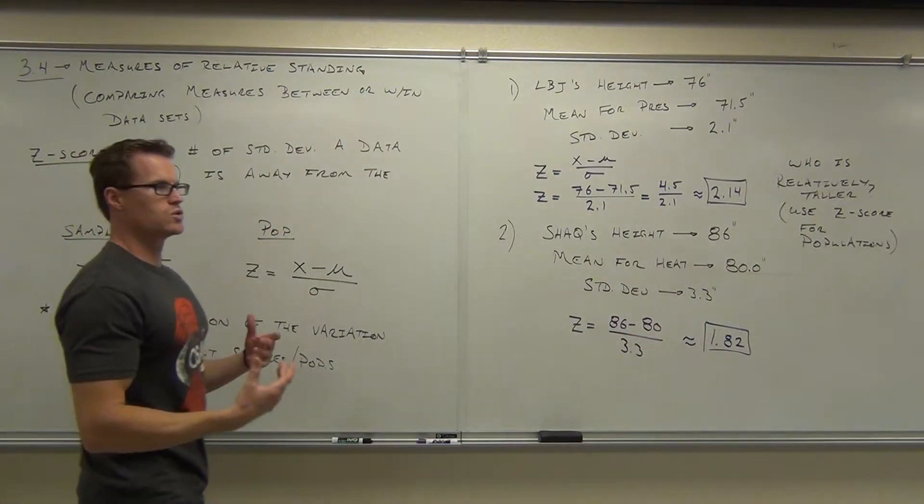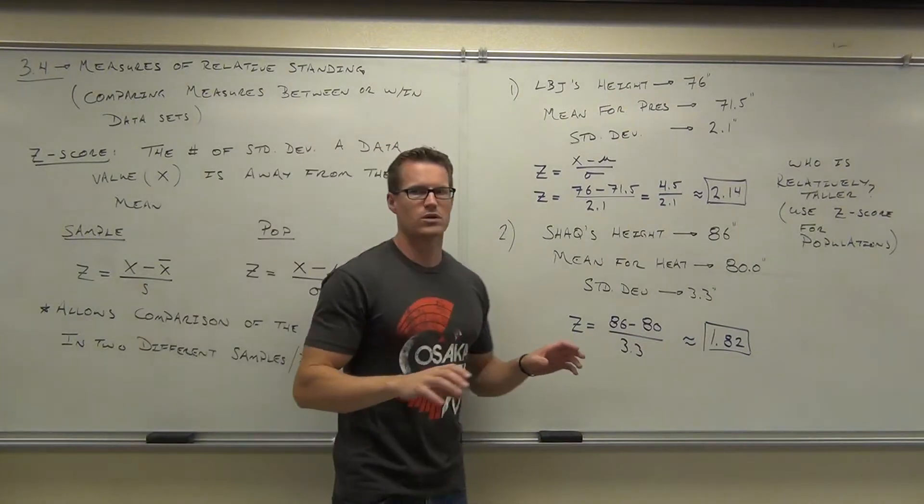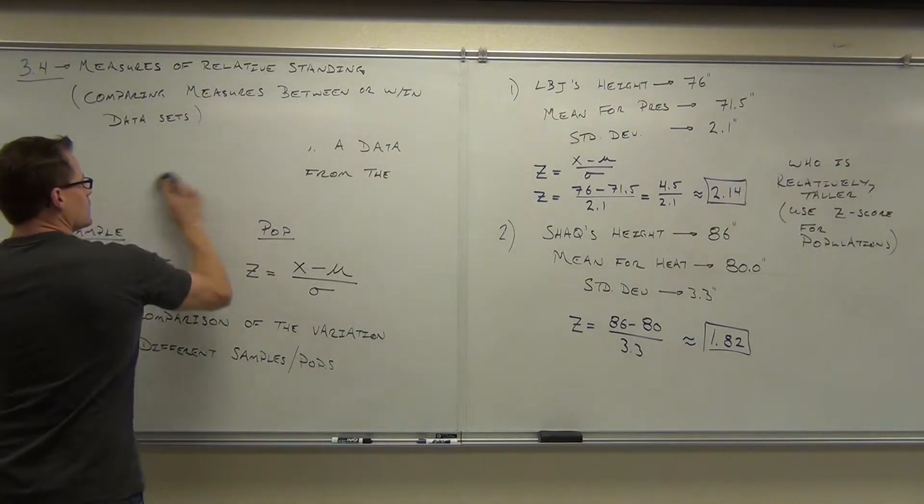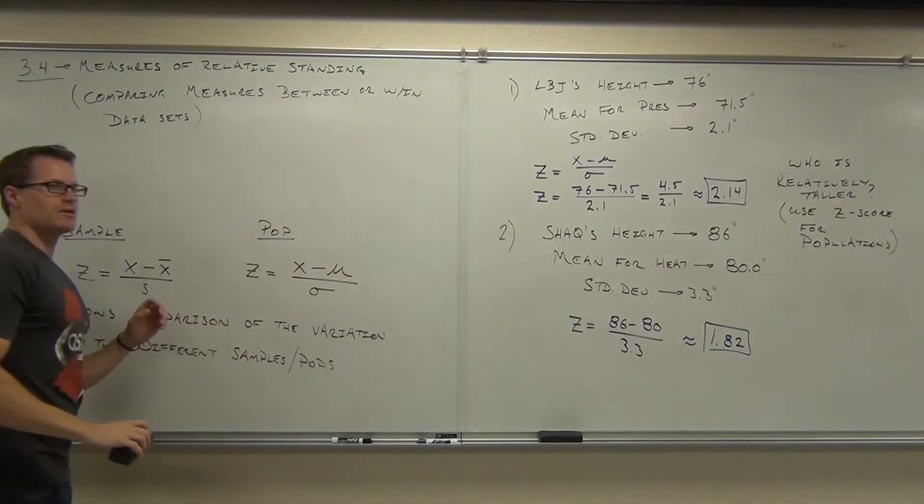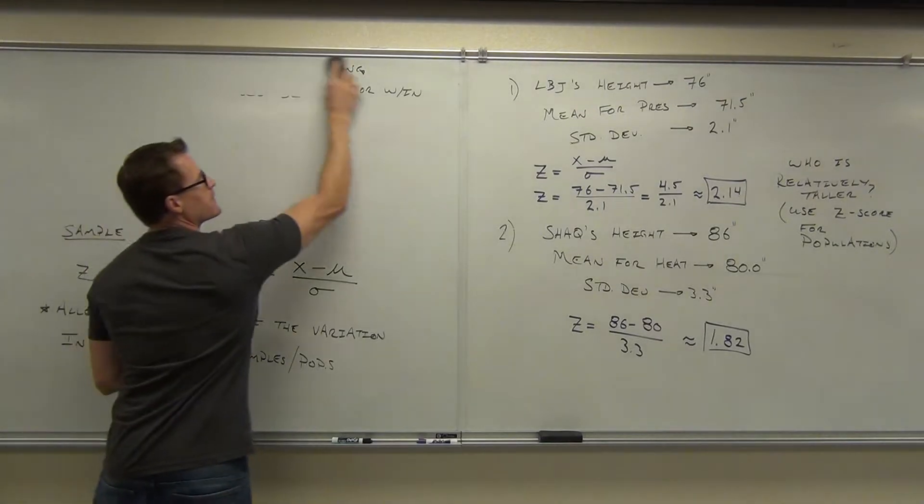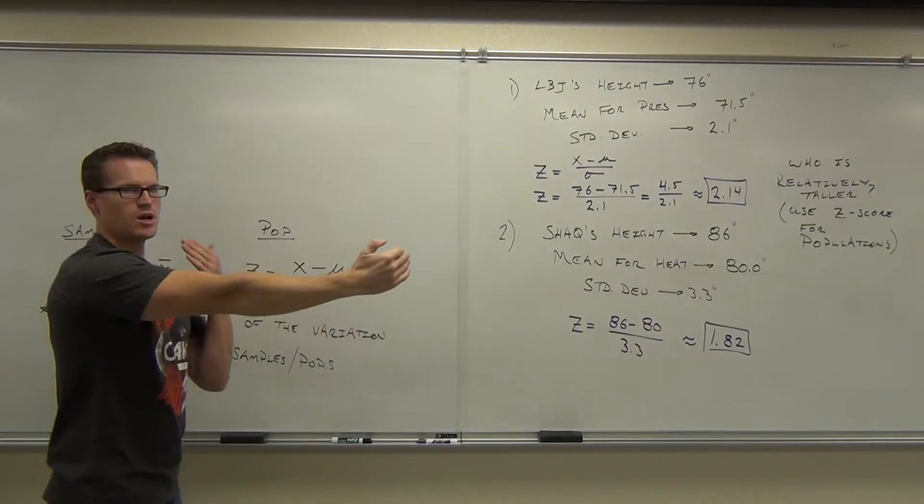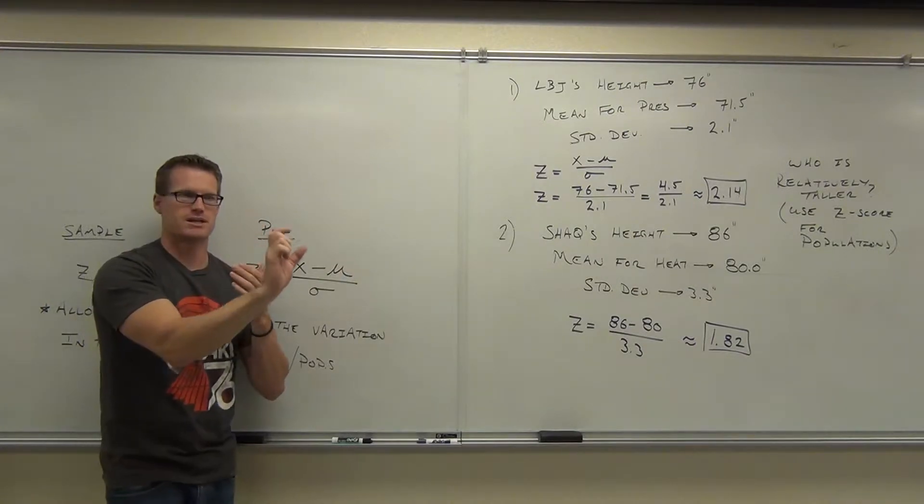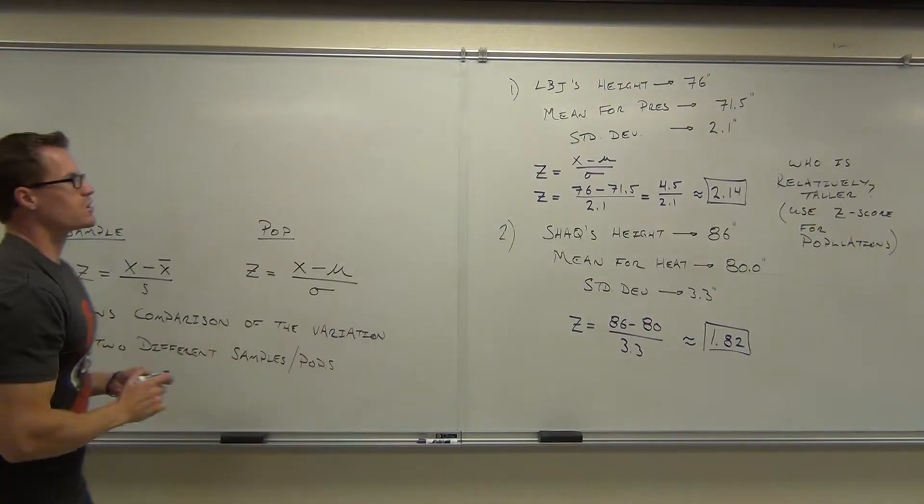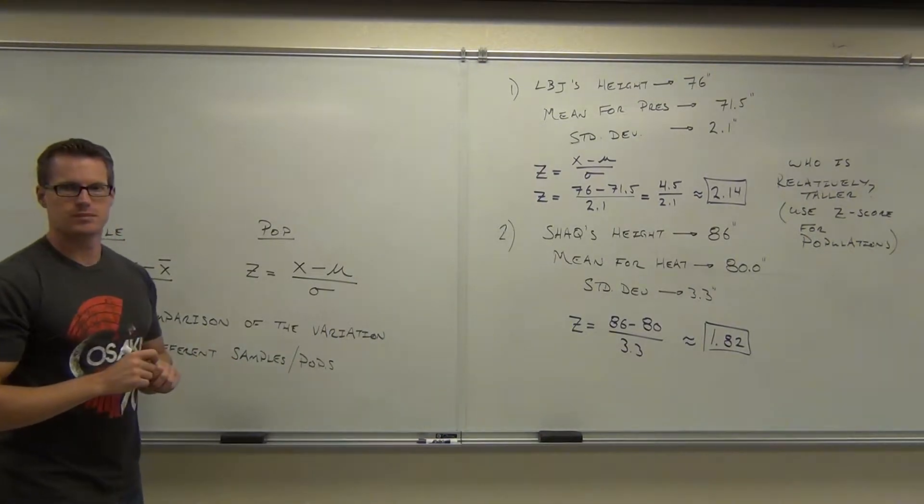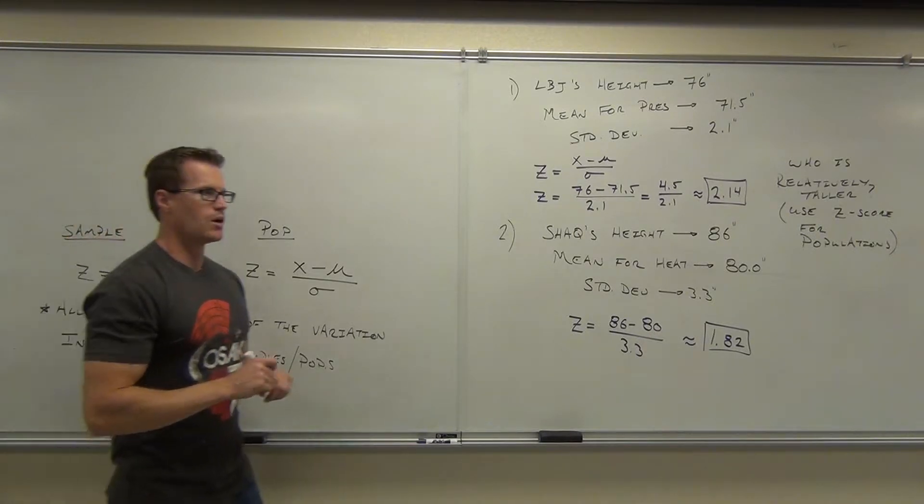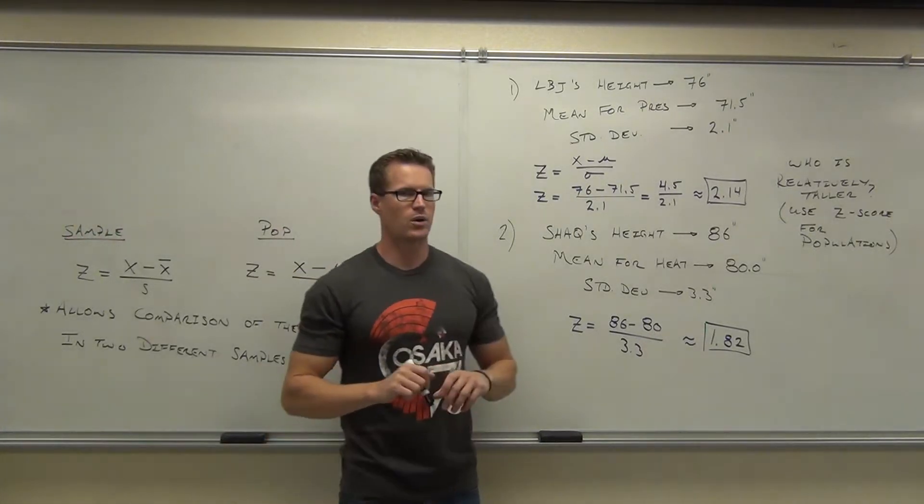How do you tell what is usual and what is unusual for Z scores? Well, if you think about it, we're really not doing anything any different than what we did on Wednesday when we found out how many standard deviations were in between two numbers. We're just doing it on an individual data piece by data piece situation. So do you remember the empirical rule?